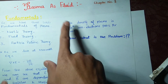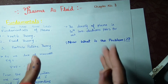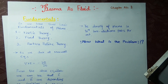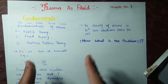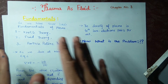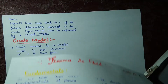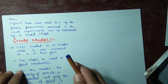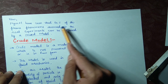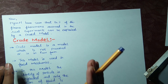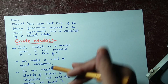This is the problem: the density of plasma is so large that we cannot examine every particle. So what is the solution? Plasma as a fluid is the solution. We consider plasma as a fluid and assume a crude model, which elaborates approximately 80% of plasma behaviors. Physicists have seen that 80% of plasma phenomena observed in real experiments can be explained by this crude model.